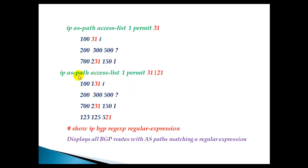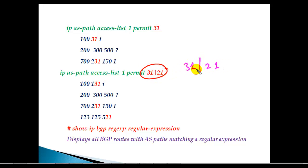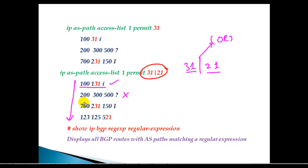The next special character is the pipe symbol, which works like an OR operator. For example, 'ip as-path access-list 1 permit 31|21' will match either 31 or 21 in the AS path. If the AS path contains 31 it matches, if it contains 21 it matches, but if neither 31 nor 21 is present, it does not match. So if you want to match any AS path containing either of two numbers, use the pipe symbol between them.